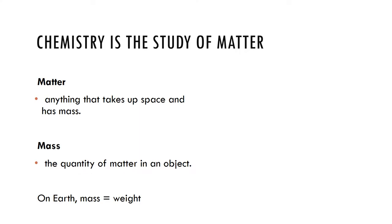Matter is anything that has mass and occupies space. There are three states of matter that we will examine. Mass is the quantity of matter in an object — basically the amount of material. It's a physical property and it determines the weight of an object in Earth's gravitational field. For our purposes in this course, the mass of an object is the same as its weight.